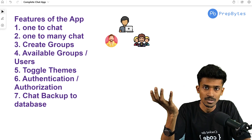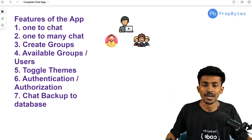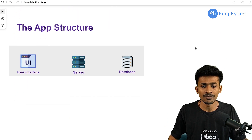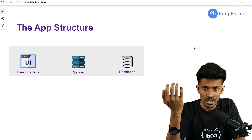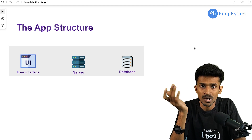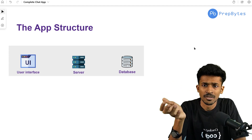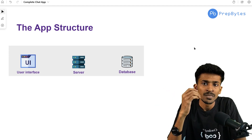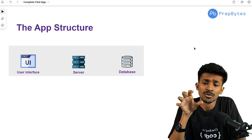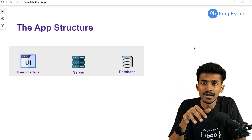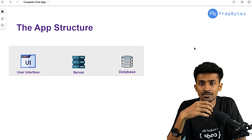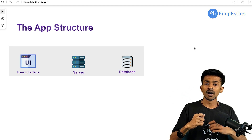Now we have a good idea of the features we want to implement. Like every other full-stack web application, we need to build a front end and a back end. Every full-stack application has three main components: the UI — what the user interacts with; the server — responsible for communicating with the UI, handling security, authentication, and authorization; and the database — responsible for storage.